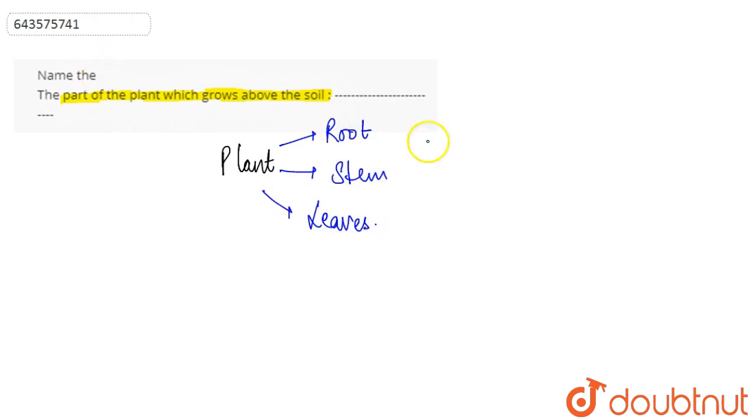We'll discuss the roots of the plant. They are found underground in the soil and are present under the ground so as to uptake the minerals and water from the soil. Now, the stem grows above the ground.